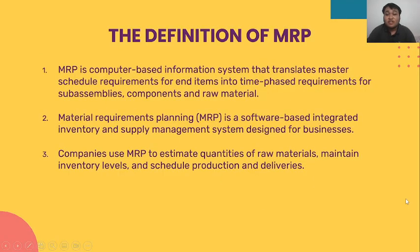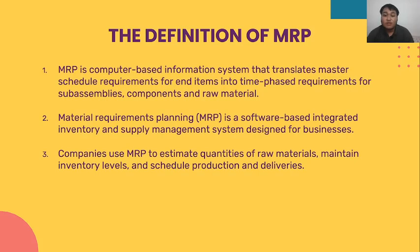The definition of MRP — material requirement planning. Material requirement planning is a computer-based information system that translates master schedule requirements for end items into time-phase requirements for sub-assemblies, components, and raw material. Materials requirement planning is a software-based integrated inventory and supply management system designed for businesses. Companies use MRP to estimate quantities of materials, maintain inventory levels, and schedule production and deliveries.